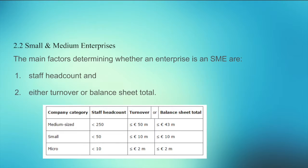Small and medium-sized enterprises, or small and medium-sized businesses, are businesses whose personnel numbers fall below certain limits. The main factors determining whether an enterprise is an SME are: staff headcount less than 250, turnover less than 50 million, and balance sheet less than 43 million euros. The abbreviation SME is used in the European Union and by international organizations such as the World Bank, the United Nations and the World Trade Organization. Small enterprises outnumber large companies by a wide margin and also employ many more people.